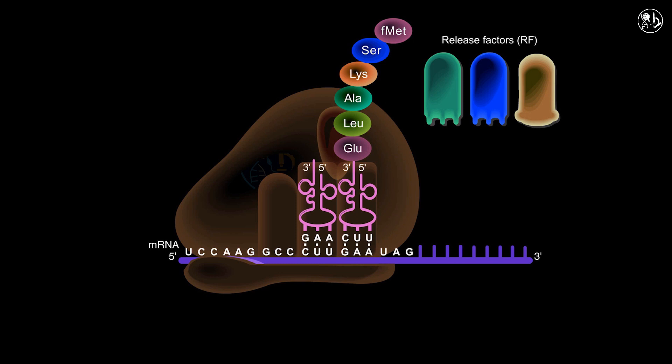There are three RFs in E. coli: RF1, RF2, and RF3. RF1 is responsible for recognizing UAA and UAG, whereas RF2 is responsible for recognizing UAA and UGA.